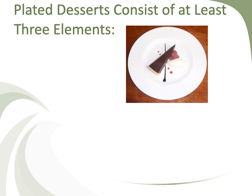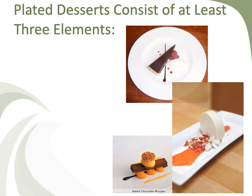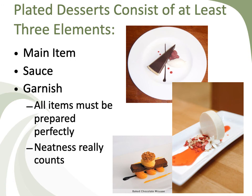All desserts consist of at least three elements. On a plated dessert, you have to have a main item, a sauce, and a garnish. Some desserts have more than one sauce or garnish, but they will usually have one main item, a sauce, a garnish, and then maybe a couple of other small elements. All items on that plate need to be prepared perfectly — not just sort of good or good enough, but prepared perfectly so they could stand alone and be eaten on their own. But when brought together into a composition where flavors and textures accompany each other, that's when the real music starts to happen.